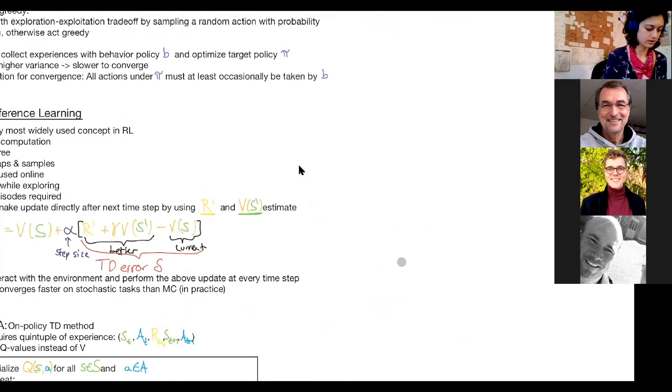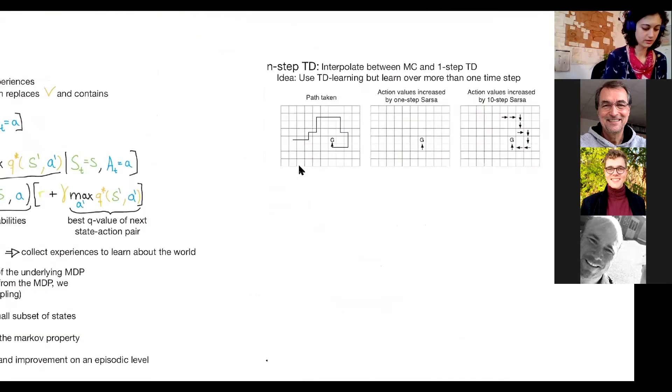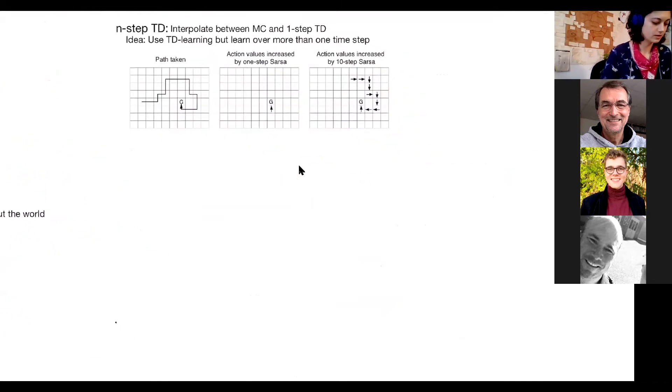Okay, so then I would go on with n-step learning, n-step TD. So basically we want to interpolate between Monte Carlo and one-step TD now. The idea is we are doing a whole experience. So let's say we have a maze here which has no rewards everywhere except at this G, which gives us a high reward.